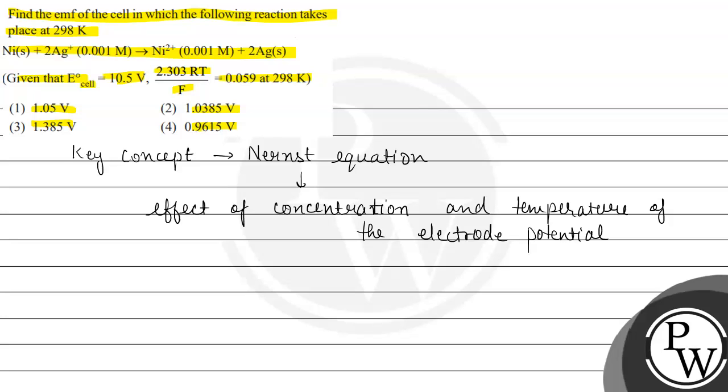First of all, let us write the Nernst equation: Ecell equals E°cell minus 2.303 RT divided by nF log of product concentration divided by reactant concentration. Ecell represents the EMF of the cell, E°cell represents the standard electrode potential, R is gas constant, T is temperature, n represents the number of electrons transferred in the balanced equation, and F is Faraday's constant.